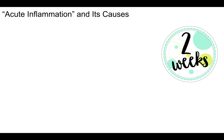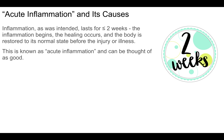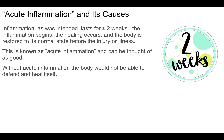There are two types of inflammation. The first is called acute inflammation — inflammation as it was intended — which lasts for less than or equal to two weeks. The inflammation begins, the healing occurs, and the body is restored to its normal state before the injury or illness. This is known as acute inflammation and can be thought of as good, because your body needs inflammation to defend and to heal itself. Without acute inflammation, the body would not be able to do these things, so inflammation has a role in a healthy lifestyle.